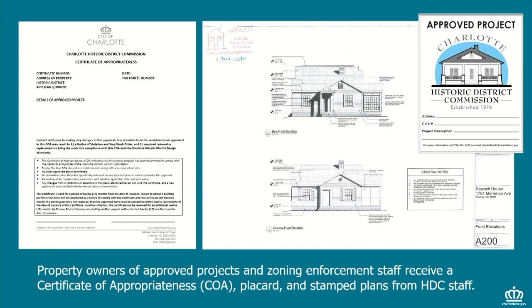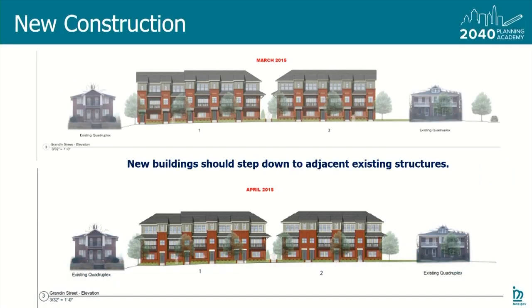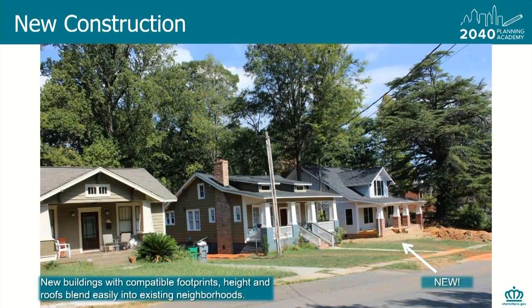Once a project goes through either the full commission or staff review, a Certificate of Appropriateness is issued — our version of a permit. It includes a written description of the project, stamped architectural plans, and a placard sent to property owners to post in their window so neighbors and the public know the project was approved. The COA and plans are also posted to the planning department website and sent to zoning and permitting. This is an example of a multifamily project in Wesley Heights — the project changed with input from the commission, with improved door and window placement, roof lines, and the building now stepping down to existing houses.